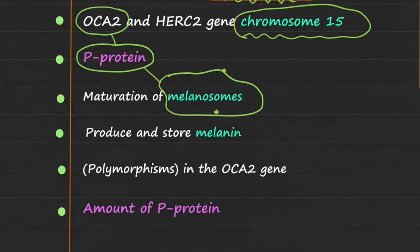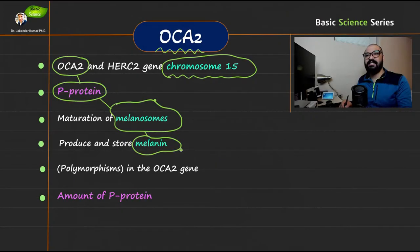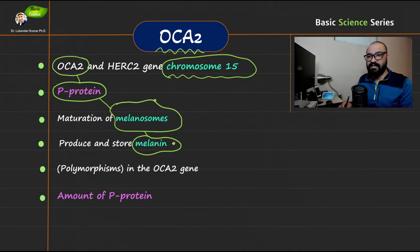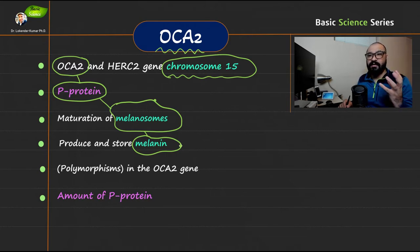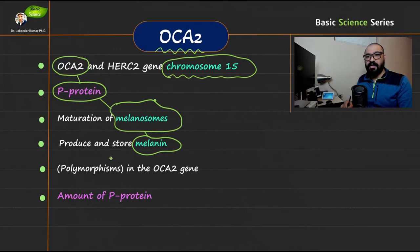These melanosomes are responsible for the production and storage of melanin, and that is the pigment. This is the important point: melanin is the pigment responsible for the different eye colors and different shades of eye color. The production and storage of this particular pigment is affected by the OCA2 gene.